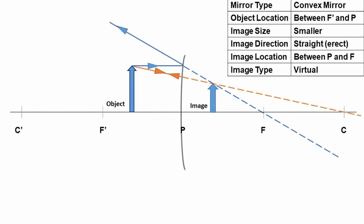Hence, we can say that irrespective of the position of the object with respect to the convex mirror, the image formed is always smaller, erect, and virtual in nature.